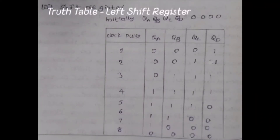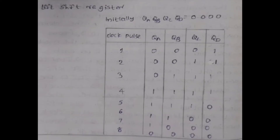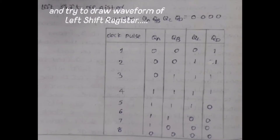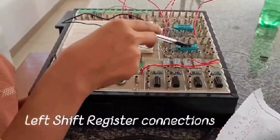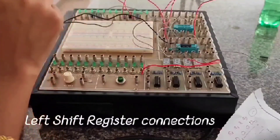For the left shift register truth table, the only difference is that data is shifted from QD towards QA, that is, towards the left. The input is given at QD. The logic is simple and similar to the right shift register, so you can go through the table to understand how it works.